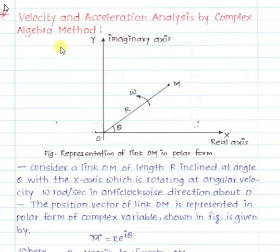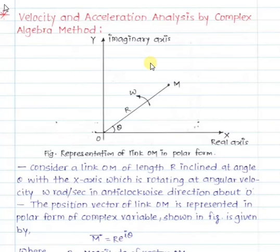Kinematic analysis involves studying the motion of different parts of a mechanism. In this video we are going to study the second analytical method, that is the complex algebra method. Before starting, you must know what a complex number is. A complex number consists of a real term and an imaginary term. We consider a link in vector form, write its complex number, and use that to find velocity and acceleration.